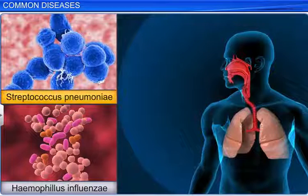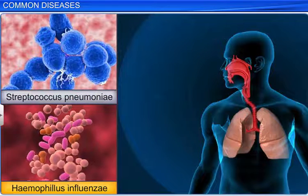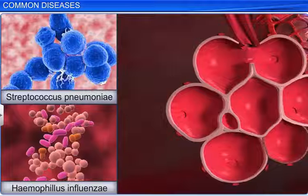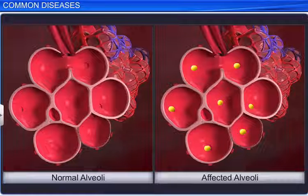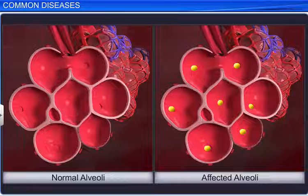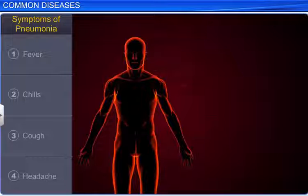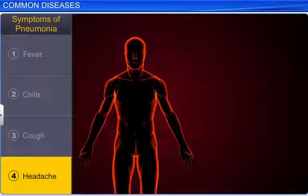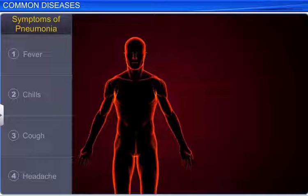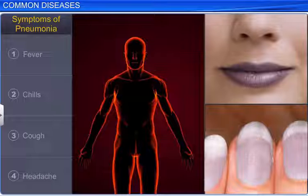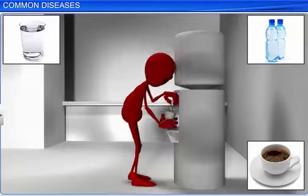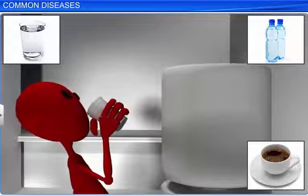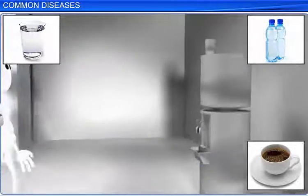Other bacteria like Streptococcus pneumoniae and Haemophilus influenzae cause pneumonia that infects the alveoli of the human lungs. As a result of the infection, the air-filled alveoli sacs are filled with fluid, and this causes respiratory problems. Fever, chills, cough, and headache are other symptoms of pneumonia. Sometimes in severe cases, the lips and fingernails turn grey to blue in colour. Pneumonia is so contagious that merely sharing glasses and utensils, or inhaling droplets released by an infected person, can spread the infection.